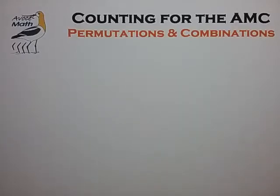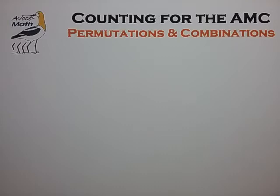Hi, welcome to Avocet Math. In this video, we're going to look at a detailed example of a permutation problem and a combination problem. I found this example very helpful when I first learned these concepts, and this example also illustrates the advanced counting strategy of over-counting by a known multiple, and you'll see what I mean by that in a few minutes.